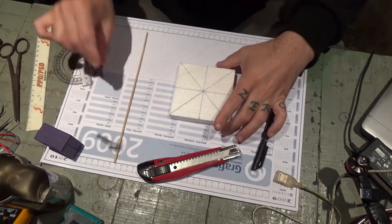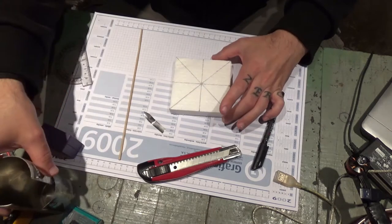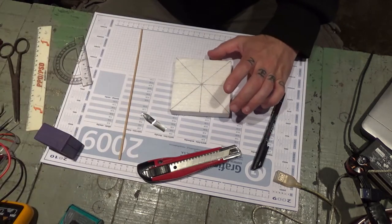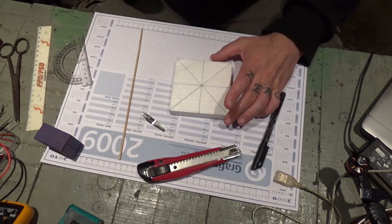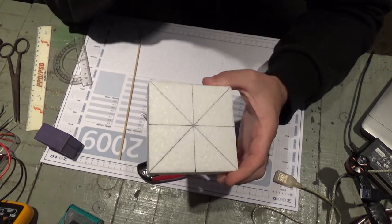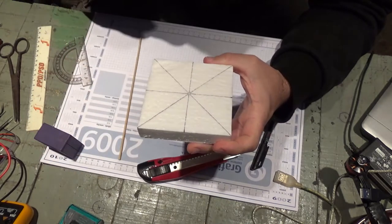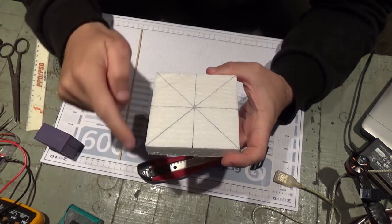Once you got that, other thing I did, I cut this piece of foam square. All sides are exactly the same.